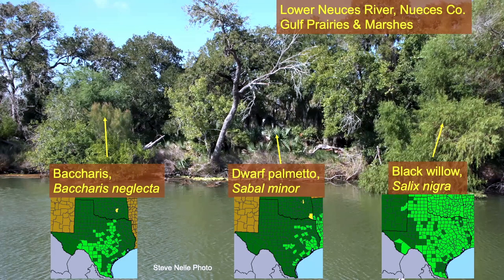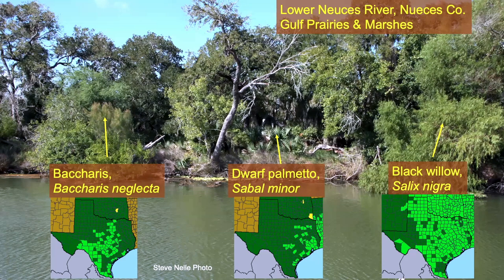The lower Nueces River widens out quite a bit — it's got a lot of white rock down around the Uvalde area, but down here closer to the Gulf you don't see the white rock as much. There's still quite a bit of diversity of vegetation. Now we're going to introduce plant communities.